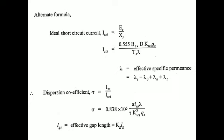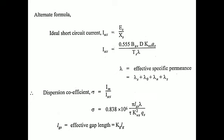An alternative formula for the short-circuit current is Isc = Es / Xs = 0.55 × Bav × d × kw × s × qs / (ts × lambda), where lambda is the specific permeance. Lambda is calculated as the summation of all slot and gap permeance components: lambda-0, lambda-n, and lambda-z. These are constant values. Using this Isc value, the depreciation coefficient rho = Im / Isc can be fully calculated. The effective gap length lgs, and constants ks and ls are also involved.